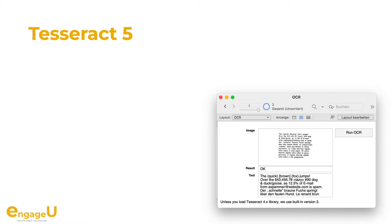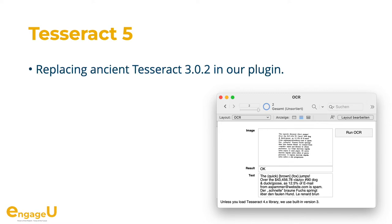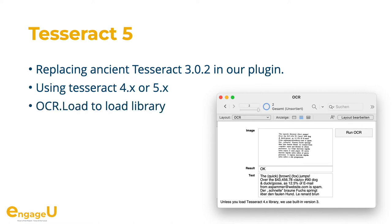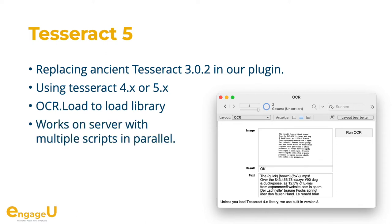For OCR, we have been using the Tesseract 3 engine for years in our plugin to recognize text — this used to be commercial OCR software which later got open sourced. You can use the load function to load Tesseract 4 or 5 libraries to use the newer, slightly better libraries. This works fine in server scripts doing several OCR operations on different CPU cores with PerformScript on Server.